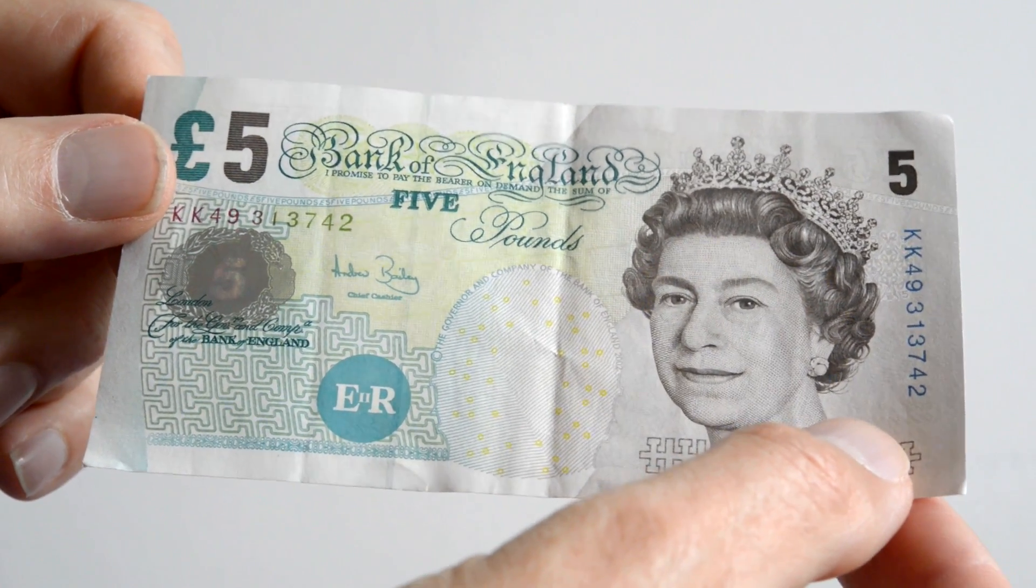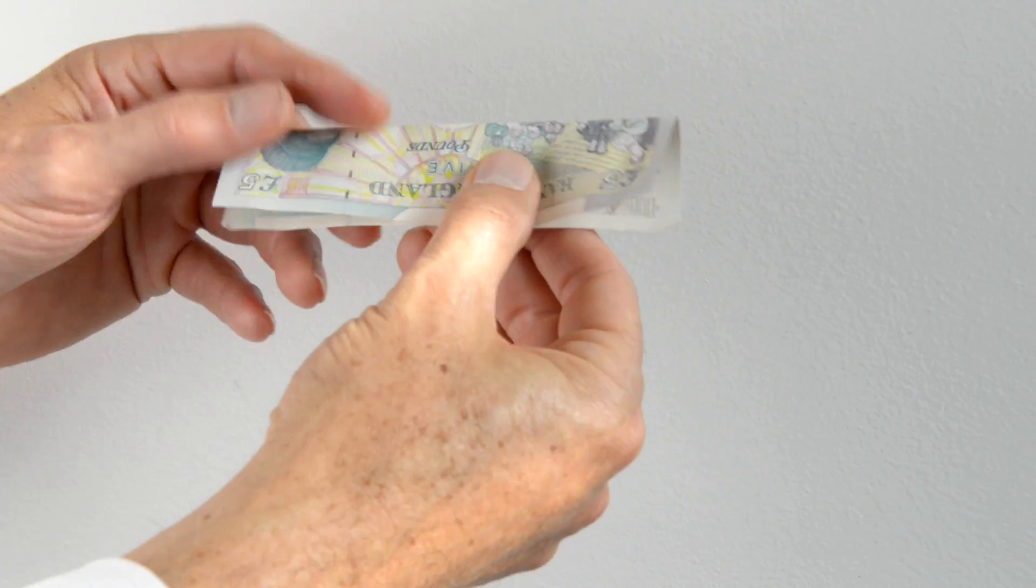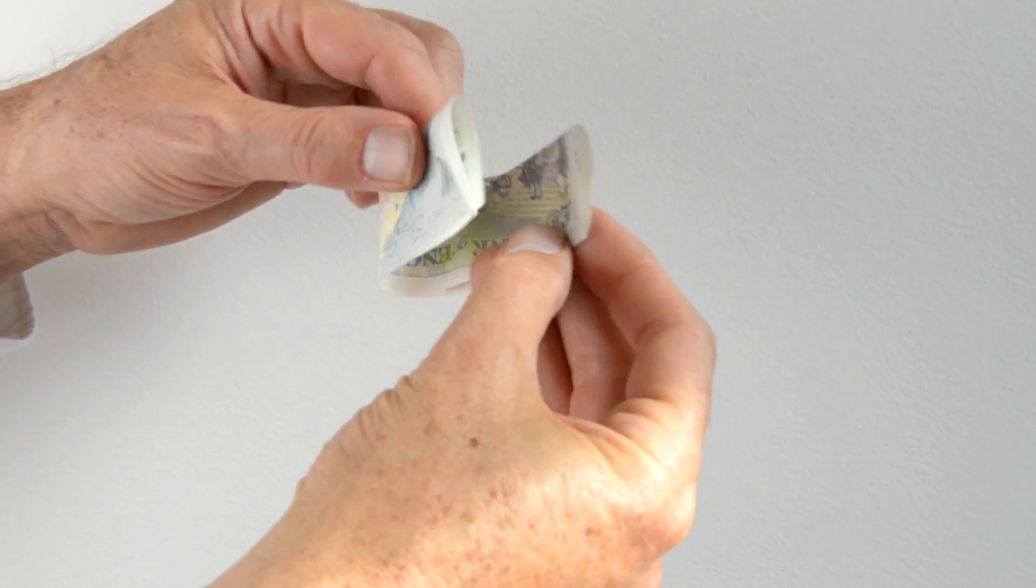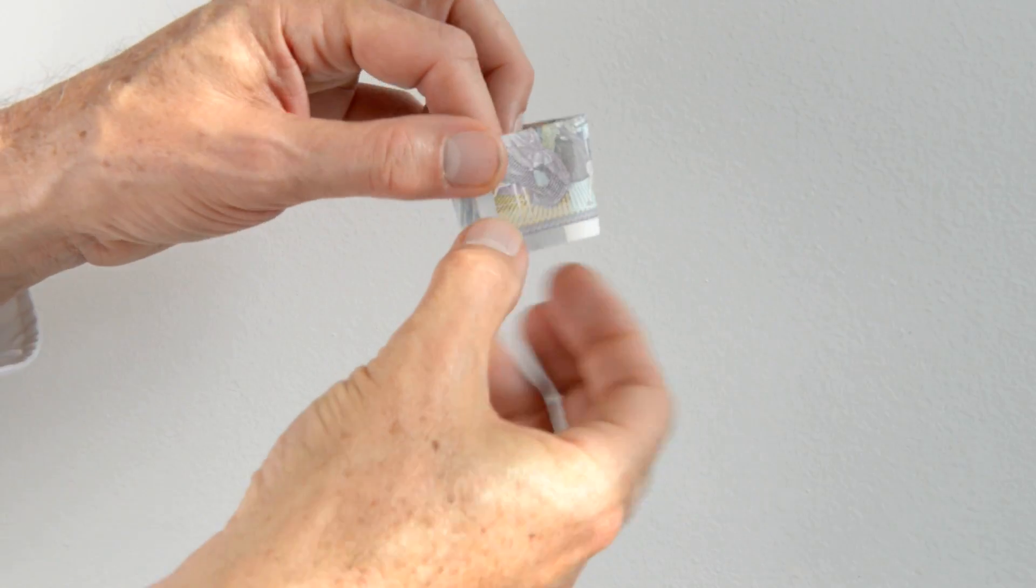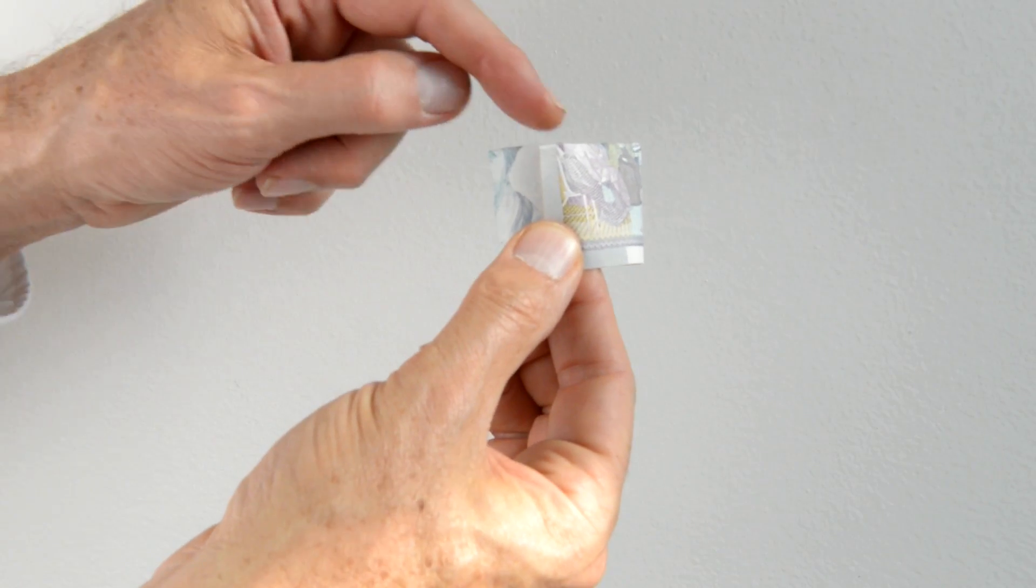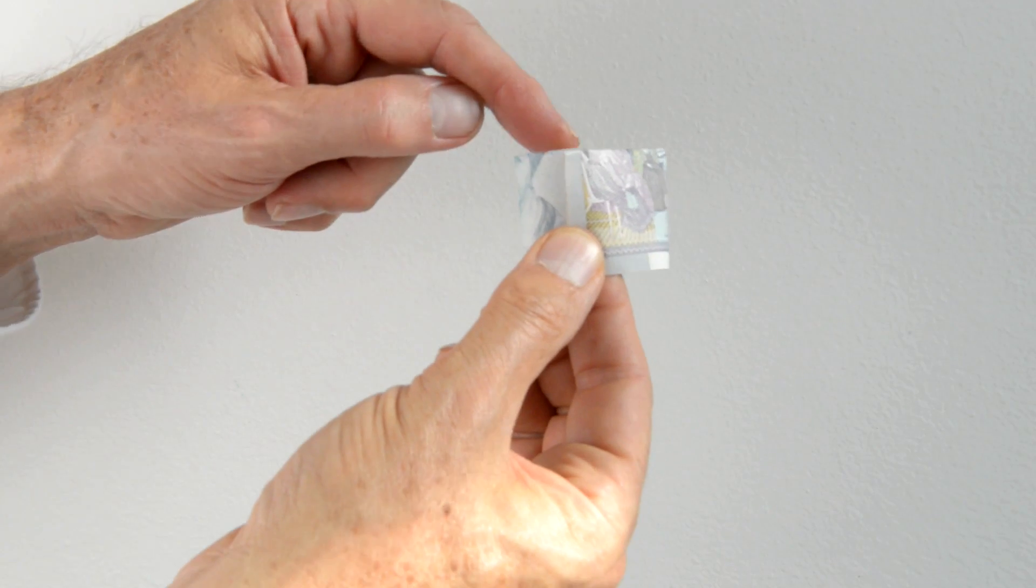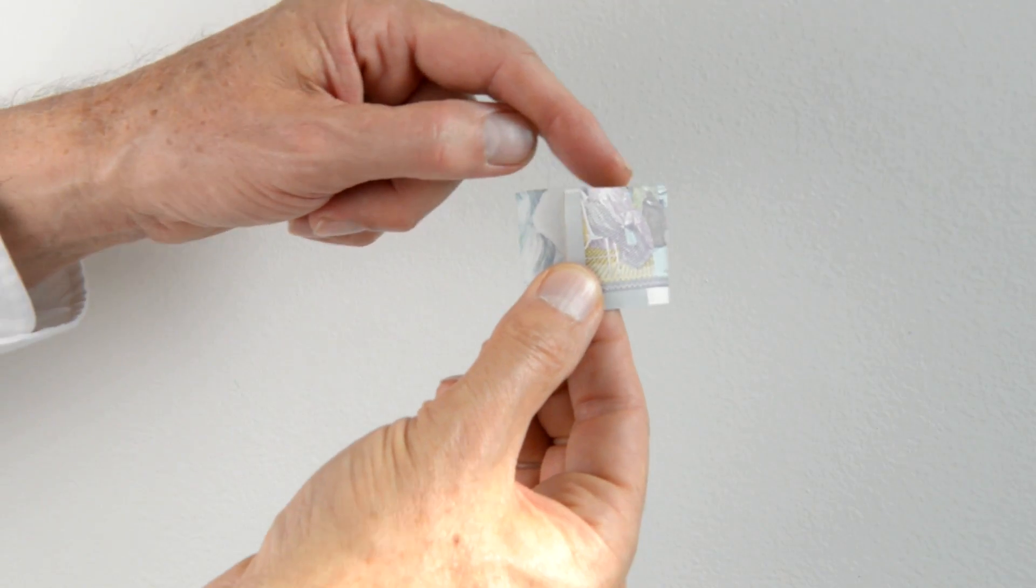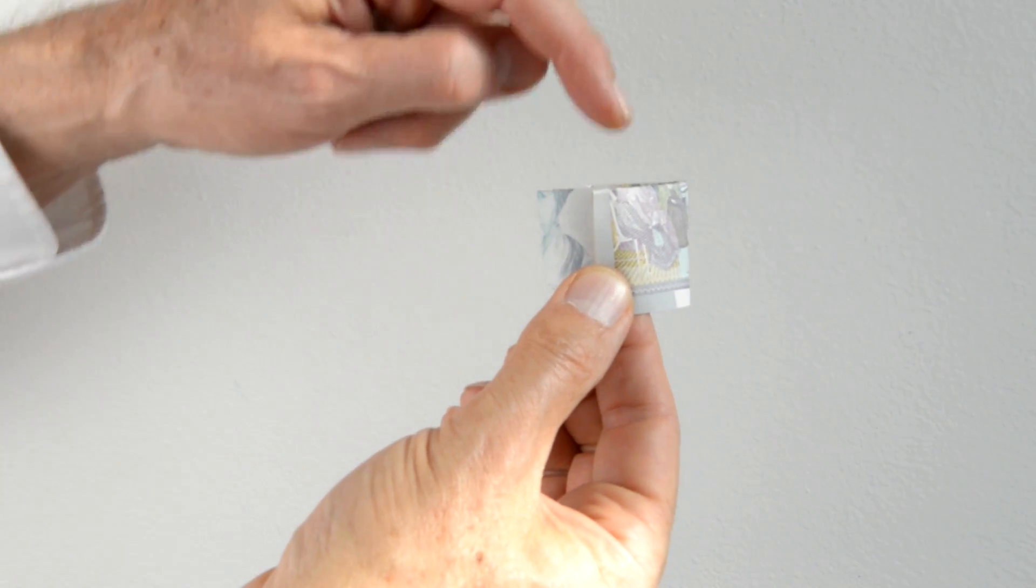The foreskin is a double-layered structure, so let's fold our piece of paper £5 note in half. And here we have a representation of the intact foreskin. The most sensitive bit on the foreskin and the penis is around the lips and on the inside layer of the foreskin.